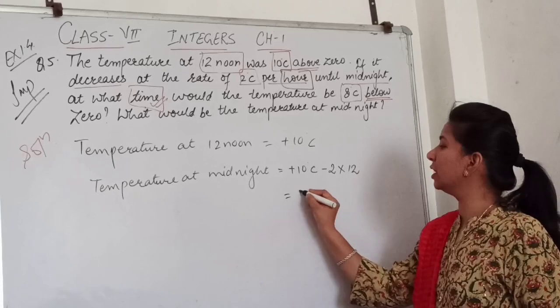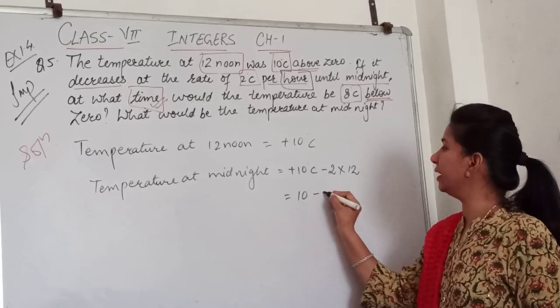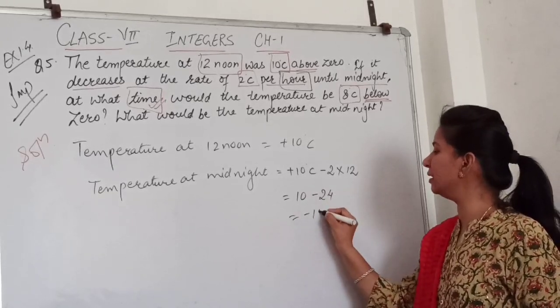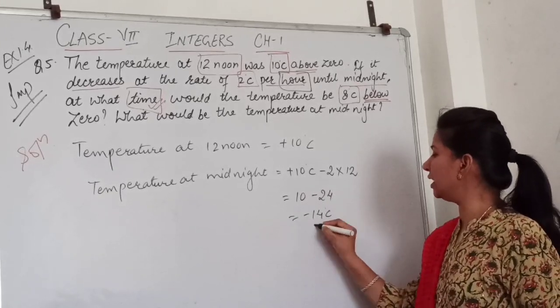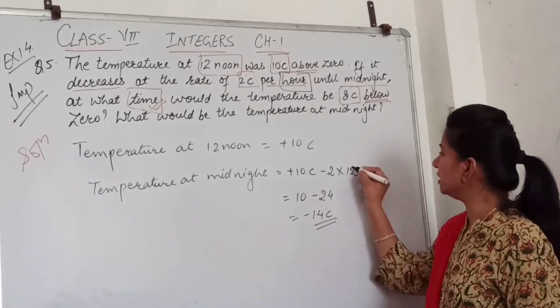This is 10 minus 24, which means the temperature is minus 14 degrees Celsius at midnight.